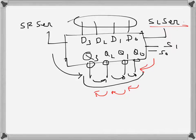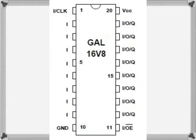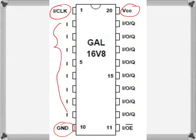Now we'll try to implement this using the OPAL Junior program. The OPAL Junior program will be used to program a GAL chip. The GAL we will use is the GAL 16V8 — it's a 20-pin IC. This is the pin diagram from the datasheet. Pin 1 is reserved for clock, there is a ground pin, a VCC pin, and there are eight input pins. The remaining pins can be used as input or output.